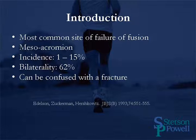The most common site of failure of fusion for the acromium is the mesoacromium. The incidence is between 1% to 15%, and bilaterally it is seen in approximately 62% of all cases. It can also be confused with a fracture, and sometimes getting the contralateral x-ray can help in diagnosis.